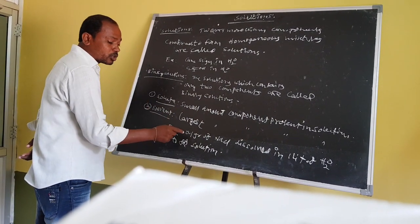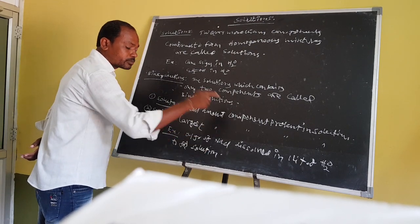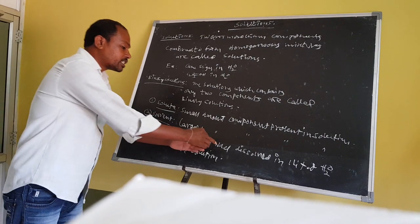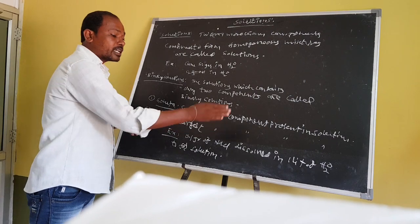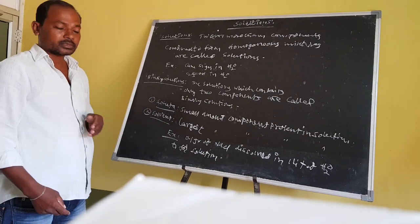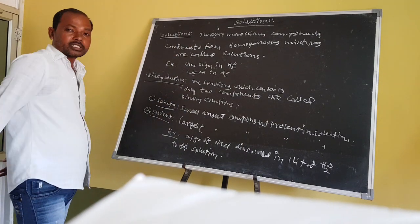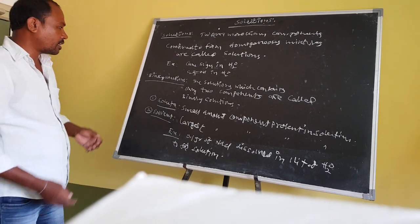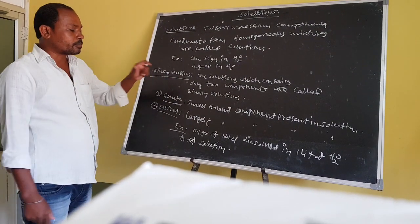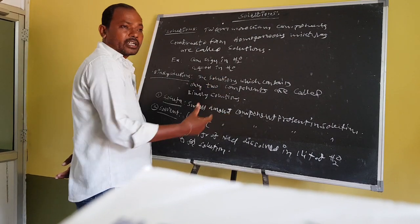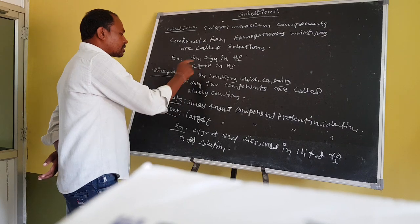Because the small amount, 0.1 gram of sodium chloride, is a small amount of component present in the solution, so it is a solute. And 1 liter of water is the largest component or large amount of component, so it is the solvent. These are the binary solutions.